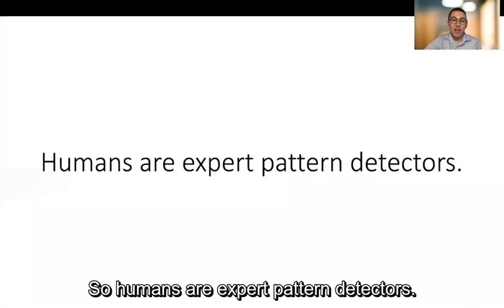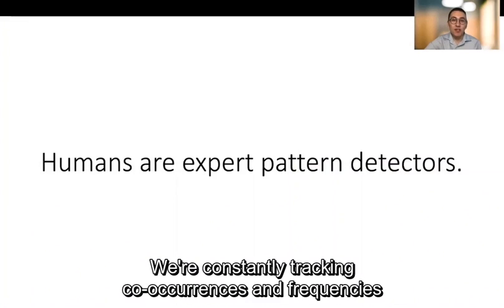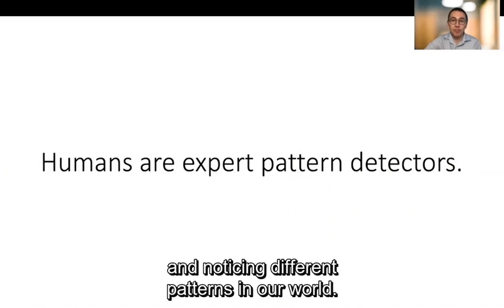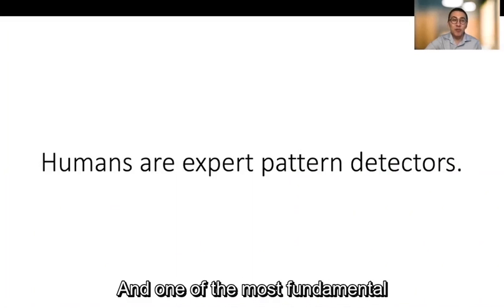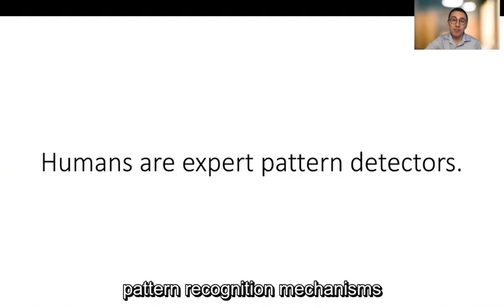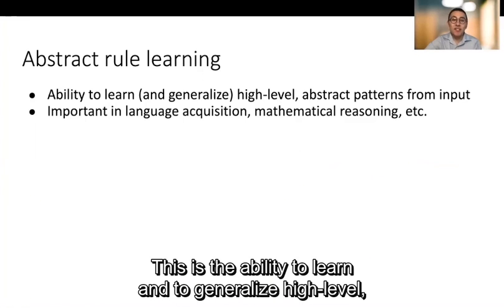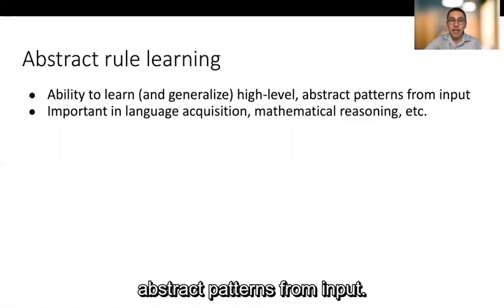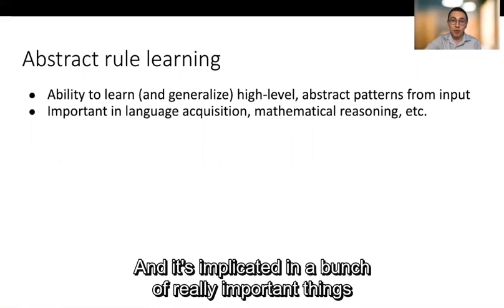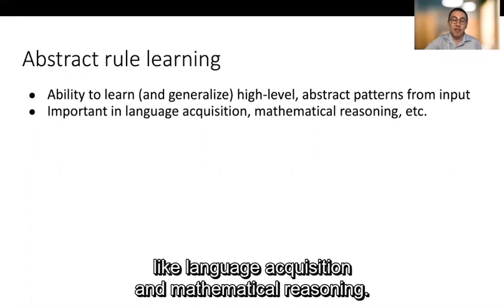So humans are expert pattern detectors. We are constantly tracking co-occurrences and frequencies and noticing different patterns in our world, and one of the most fundamental pattern recognition mechanisms that we have at our disposal is abstract rule learning. This is the ability to learn and to generalize high-level abstract patterns from input and it's implicated in a bunch of really important things like language acquisition and mathematical reasoning.